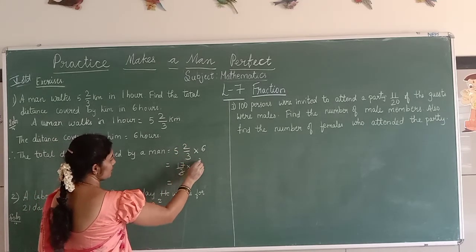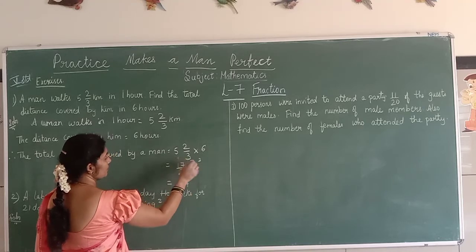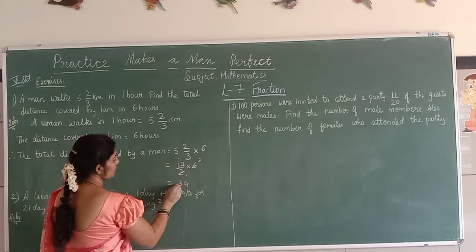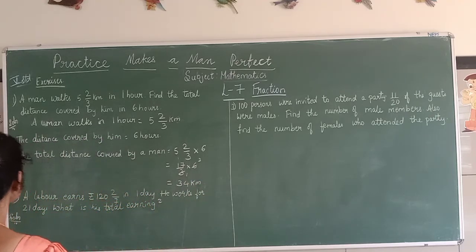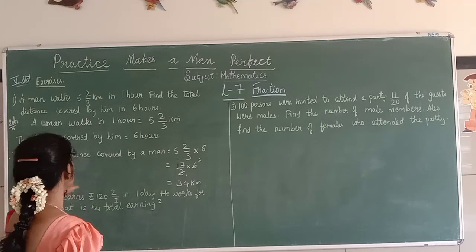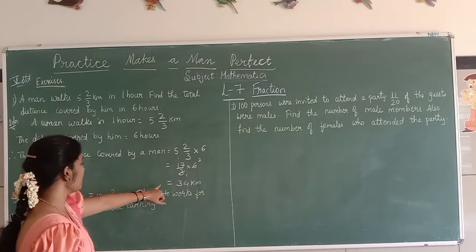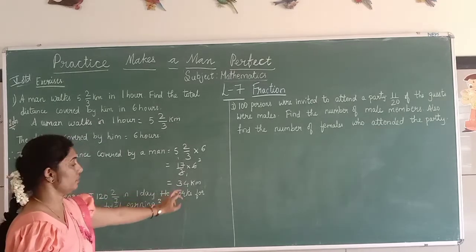So 17 times 2 equals, 2 times 7 is 14 carry 1, 2 times 1 is 2 plus 1 is 3, giving us 34. The total distance covered in 6 hours is 34 km.